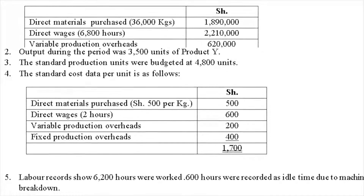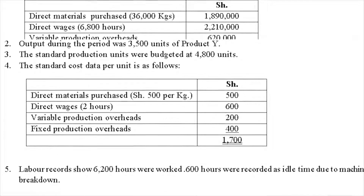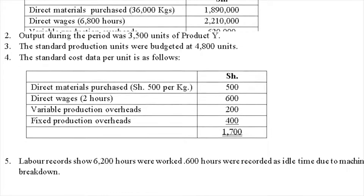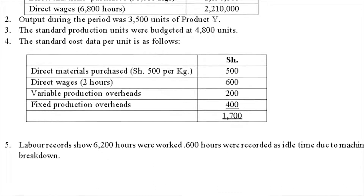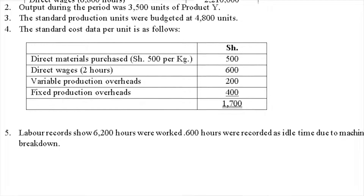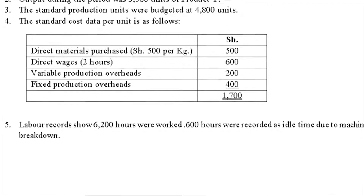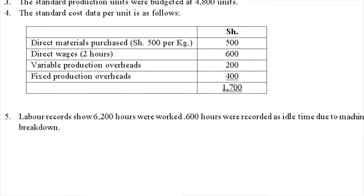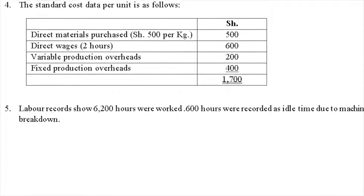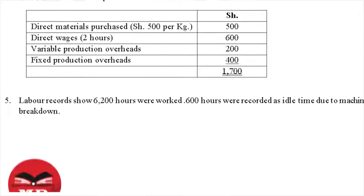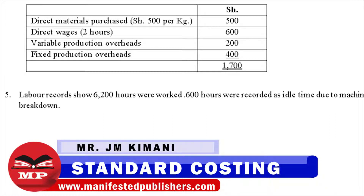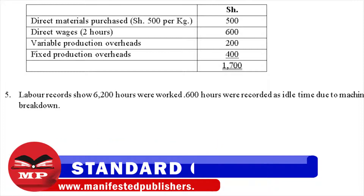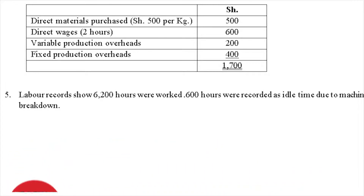Number three: the standard production units were budgeted at 4,800 units. Number four: the standard cost data per unit is as follows — direct material 500 shillings per kg, total 500 shillings; direct wages 2 hours, total 600 shillings; variable production overheads 200,000 shillings; fixed production overheads 400,000 shillings; total 1,700 shillings.